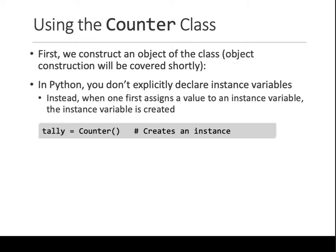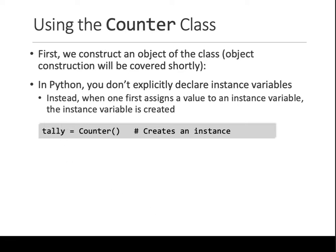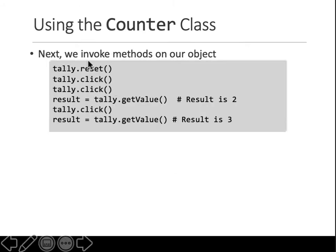In our case, once the counter class is created, we create an instance by giving it a name. So now with this object called tally, we can call the functions. We need to reset the counter, and on each click something should happen — that click will increase the counter.